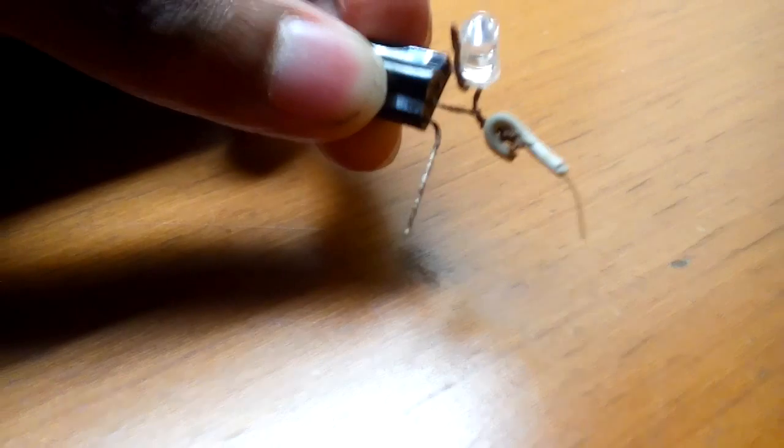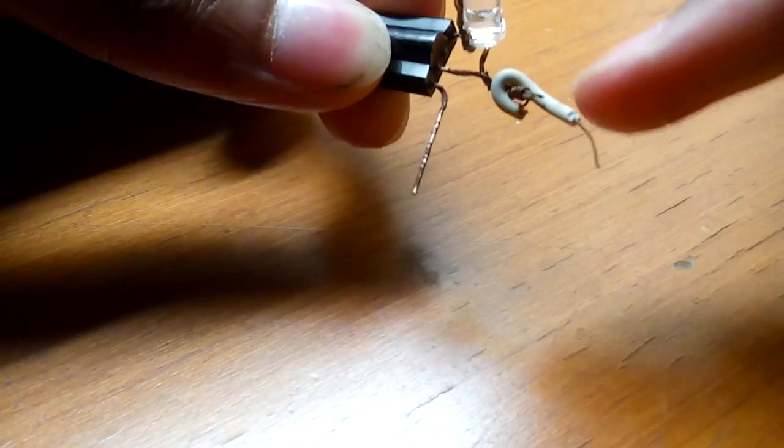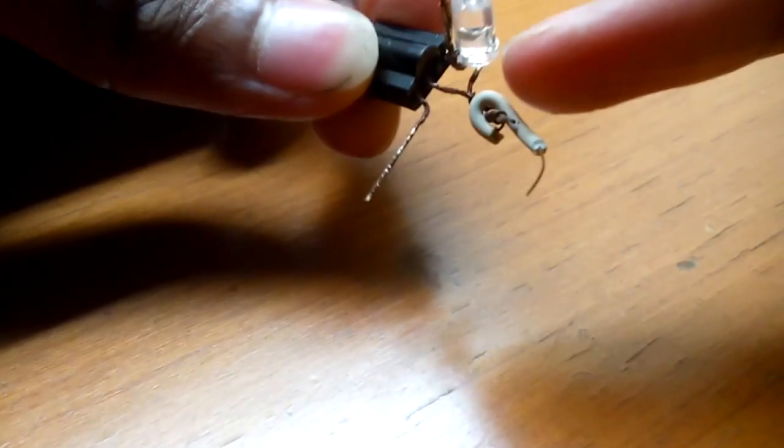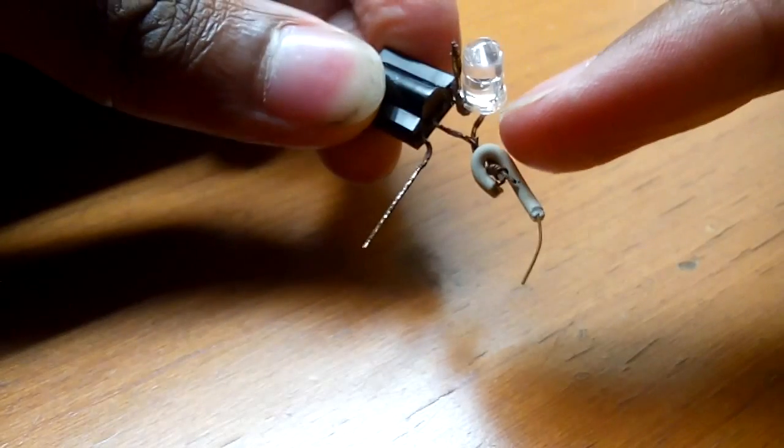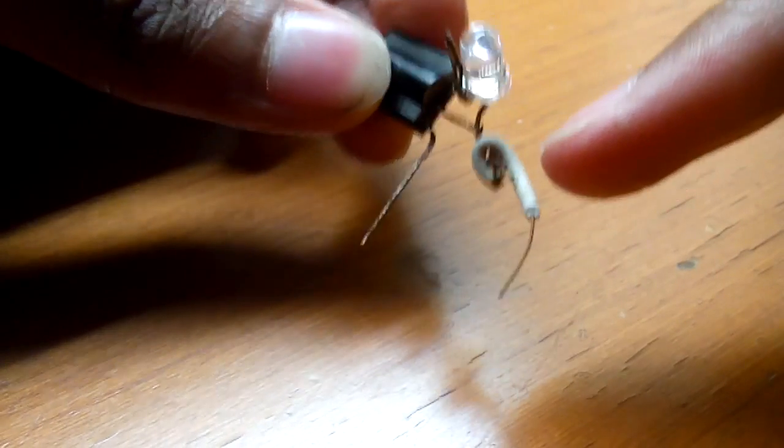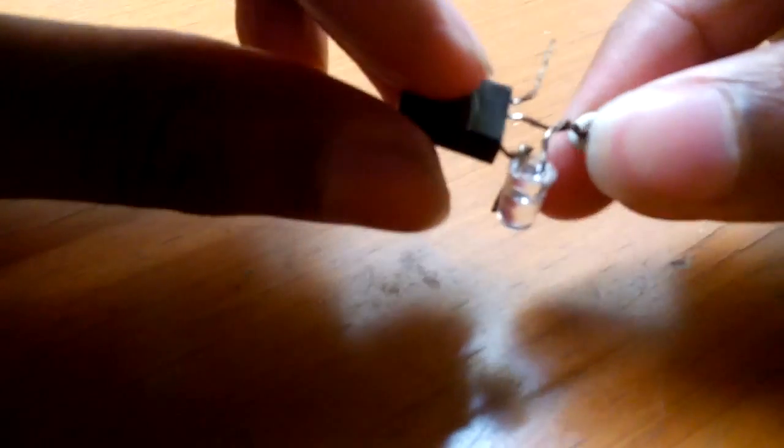The first terminal will get the negative side of the battery. The middle terminal will have the positive side of the LED and the positive part of the battery. And the third pin will have the negative part of the LED.